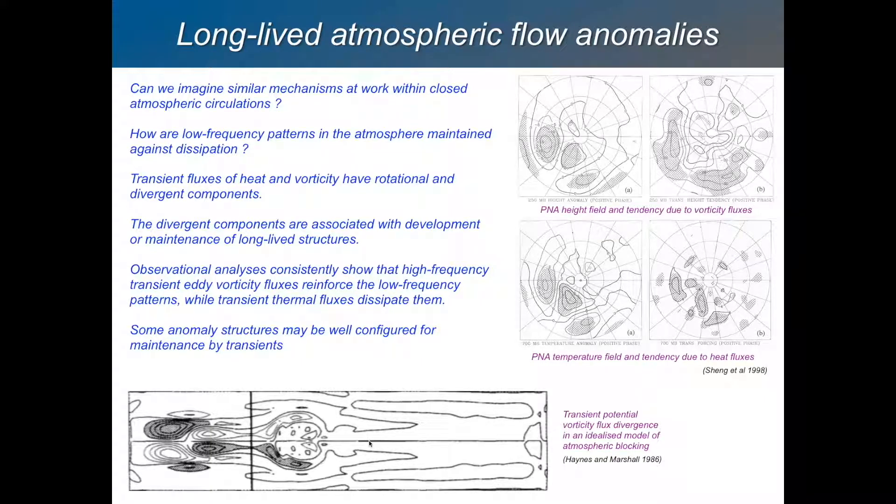Here's an experiment. This is the potential vorticity flux divergence in an idealized model where you have this reverse dipole downstream. There's a wave-maker upstream which generates lots of high-frequency disturbances. They impinge upon this stable block. The transfer of potential vorticity is such as to maintain that block against dissipation.